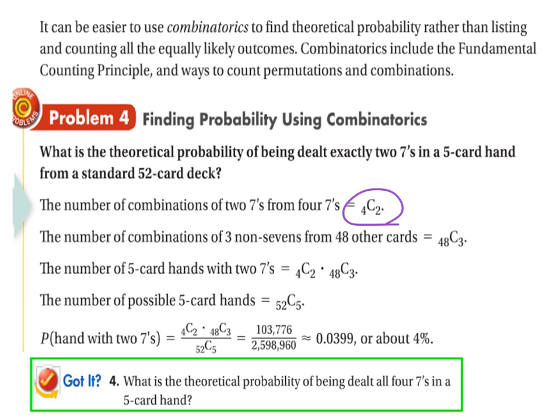Then we need to know the number of combinations of three non-sevens. That's 48C3. The reason that's 48 is because there's 48 cards in that deck that are not sevens, and we need three of them. So the number of five-card hands with exactly two sevens is 4C2 times 48C3. That's our combination of using combinations and the fundamental counting principle. The total number of possible five-card hands would just be 52C5. You can see those values here. We get 103,776 over 2,598,960 for just about 4%.